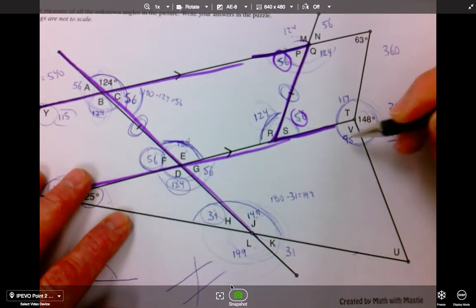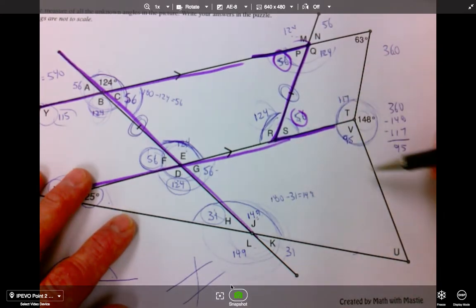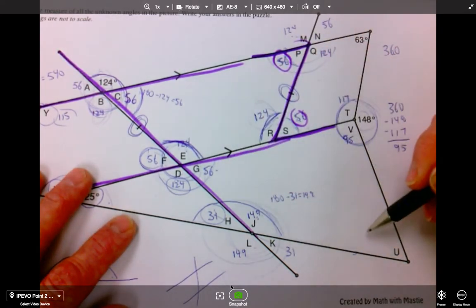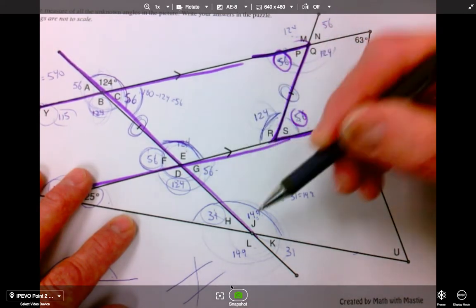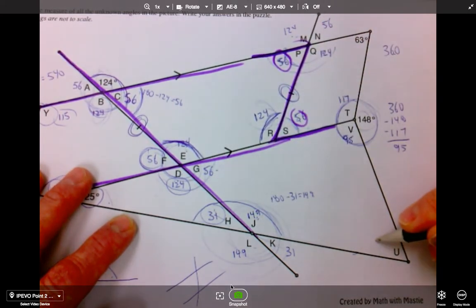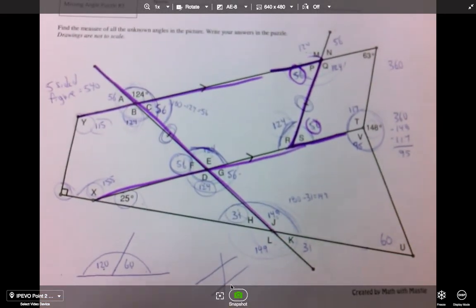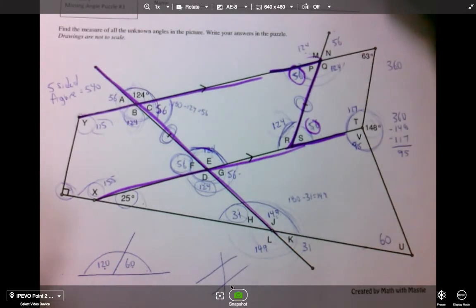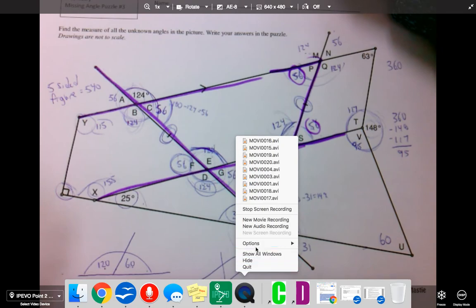And of course, if I know that this is 95 and this is 56 and this is 149, I have another quadrilateral. If I do 360, take away 95, take away 56, take away 149, I end up with 60 degrees. A lot of work and a lot of practice. And stop.